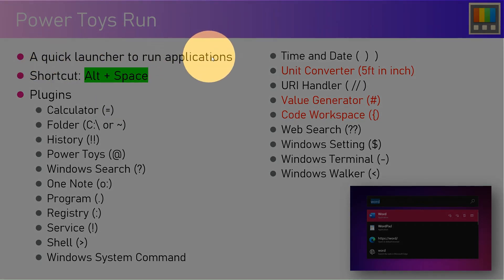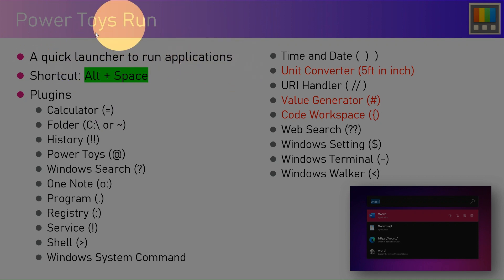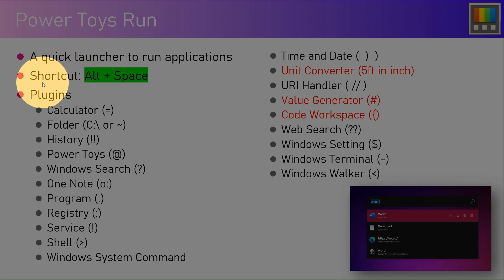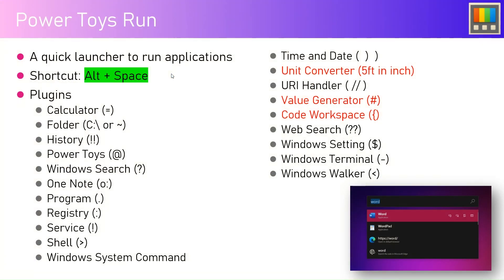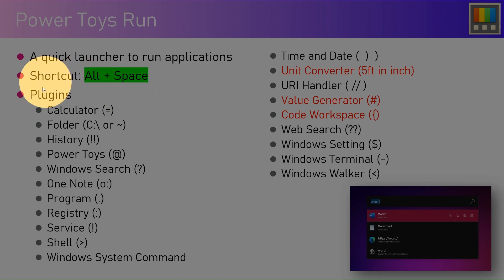It's basically a quick launcher to run applications, but beyond applications it can do much more. Once you trigger PowerToys Run it will give you a search bar, and within the search bar you need to type in some extra commands. You need not remember those commands — they are special characters.